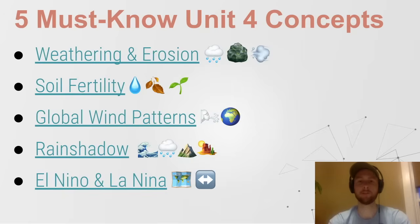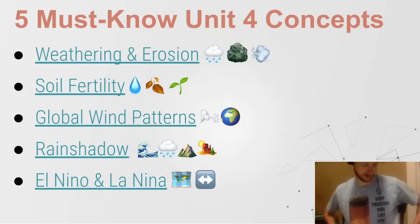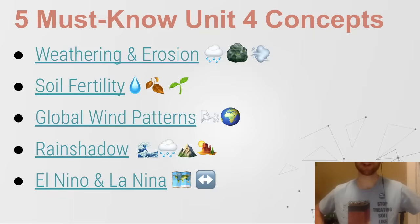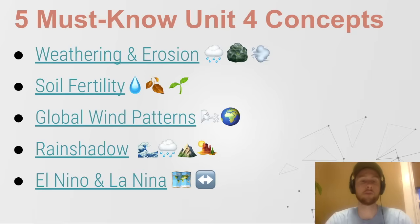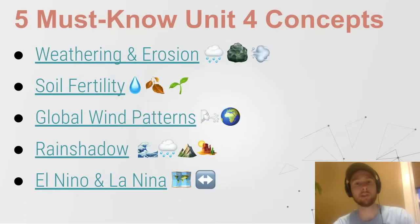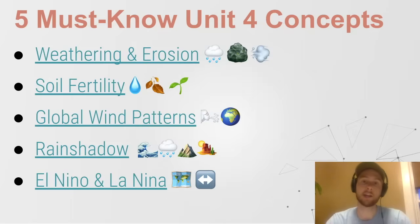We're on to Unit 4 — a personal favorite. We've got weathering and erosion: that's just the breakdown of rocks by wind and rain, and erosion is the transport of those small rock pieces or soil fragments from one place to another. Then we have soil fertility — the ability of soil to nourish plant growth. It needs good water-holding capacity and nutrients. Dead organic matter, humus, or manure added to soil can really improve soil fertility because it releases nutrients and helps retain moisture.